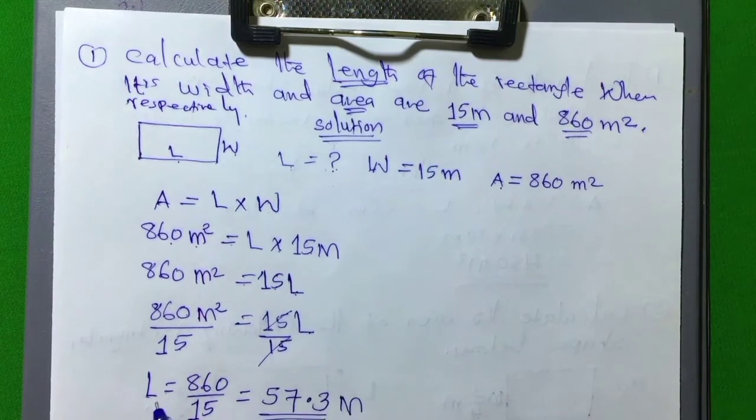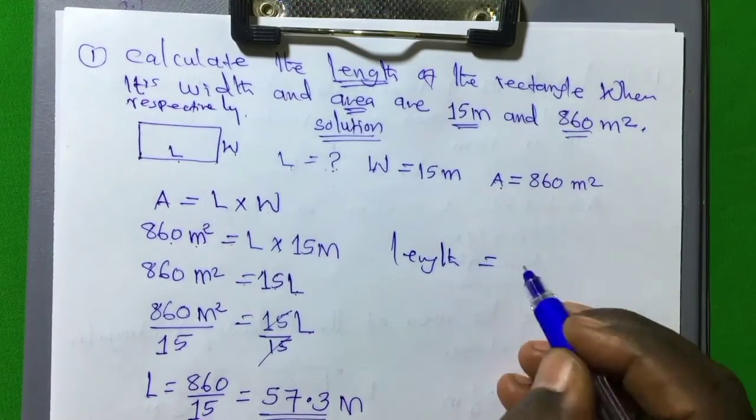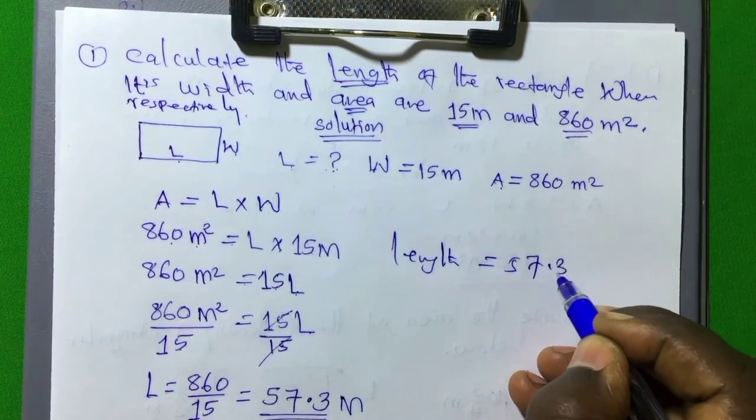From now here, the value of length, the length of the rectangle is equal to 57.3 meters.